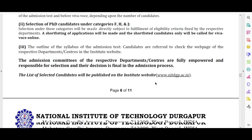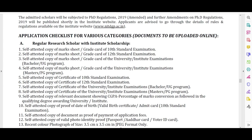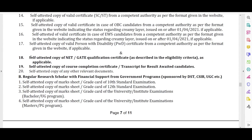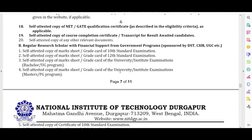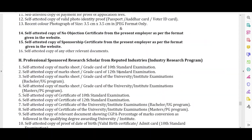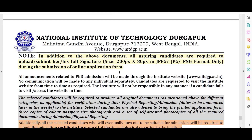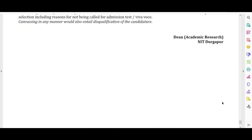The documents required include a self-attested copy of NET or GATE. Other category-specific documents are listed in the notification. The link to the notification will be provided in the description. The required signature size is specifically mentioned as 200 pixels by 80 pixels in JPG format.